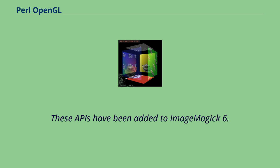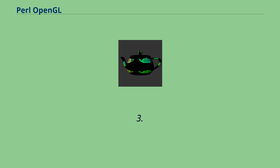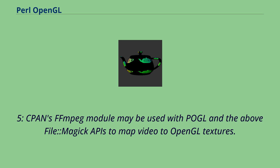These APIs have been added to ImageMagick 6.3.5. The CPAN SPPEG module may be used with Pugl in the above file colon Magic APIs to map video to OpenGL textures.